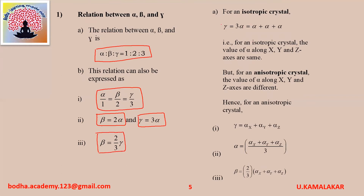For an isotropic crystal, gamma equals 3 alpha, that is, we can write this as alpha plus alpha plus alpha. For an anisotropic crystal, the values of alpha along x-axis, y-axis, and z-axis are different. Hence, for an anisotropic crystal, gamma equals alpha_x plus alpha_y plus alpha_z. Alpha equals (alpha_x plus alpha_y plus alpha_z) divided by 3, and beta equals (2/3) into (alpha_x plus alpha_y plus alpha_z).